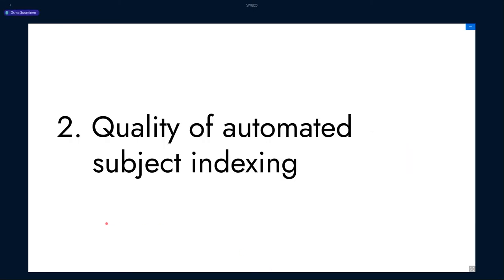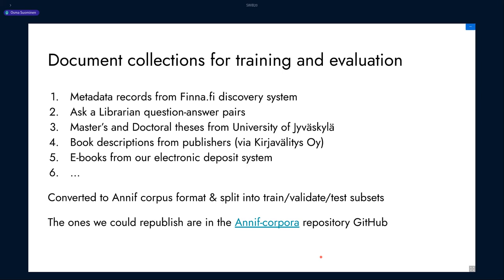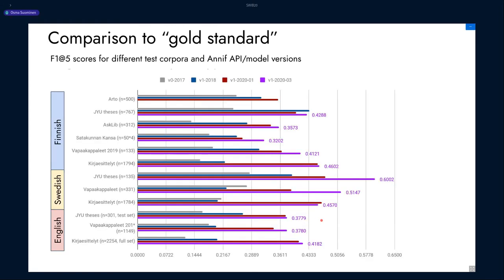To find out how well the different algorithms work in practice, we needed to collect some data for training and testing. We collected already indexed documents from various databases and systems and turned them into corpora in a standard structured format. Those corpora were split into train, validation and test subsets — we had to be careful not to test the algorithms on the same documents used for training them. We could then compare the subjects suggested by the algorithms to subjects assigned manually by human indexers — a comparison against the gold standard. This diagram shows how well the different generations of our algorithms have performed on the same corpora, with the most recent scores, shown in purple, being generally the best.